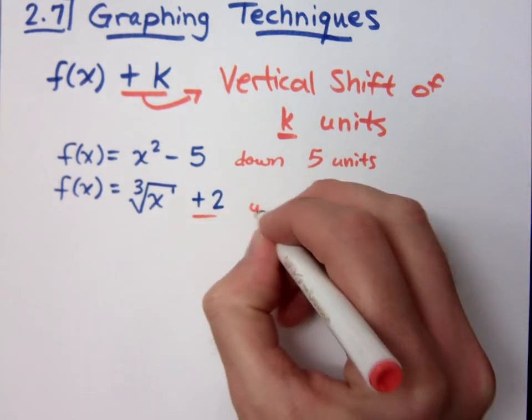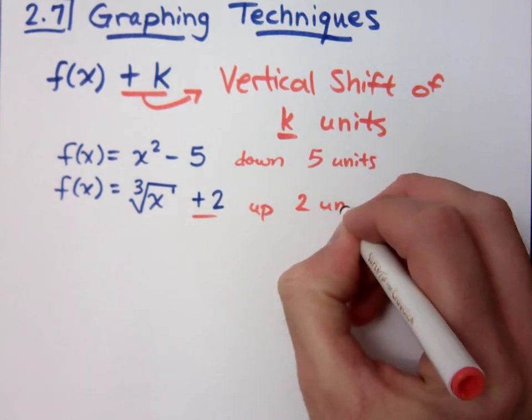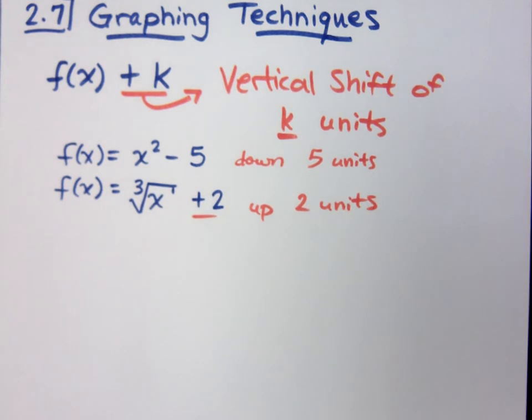So you take that shape and what does that plus 2 mean? Plus 2 means that you do exactly what you see, which is to go up 2 units. Is everybody with me on that? We're going to graph these guys in just a moment, but I want to go ahead and get these two main graphing techniques written down for you, and we're going to go back and actually graph things.